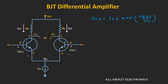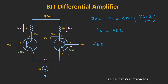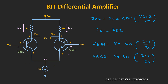Assuming both transistors are matched, Is1 equals Is2. Rearranging these expressions, Vbe1 equals Vt times natural log of Ic1 divided by Is, and Vbe2 equals Vt times natural log of Ic2 divided by Is. Since Vin1 minus Vbe1 equals Vp, and Vin2 minus Vbe2 also equals Vp, let's substitute the values of Vbe1 and Vbe2 into this expression.